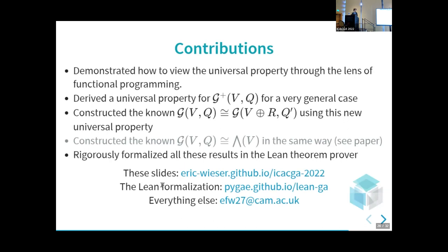To conclude: I've demonstrated how to view the universal property through functional programming with recursion examples on lists. I've shown how we can use that to build the universal property for the even subalgebra. Then we can use that universal property to build the known map from the small algebra to a big even subalgebra in a way that doesn't need any basis. In the paper I've also shown how we can use these same tricks to get the standard linear isomorphism between a Clifford algebra and the exterior algebra, which is what you do when you take the wedge product and do grade selection. All of these results are rigorously formalized in the Lean theorem prover.